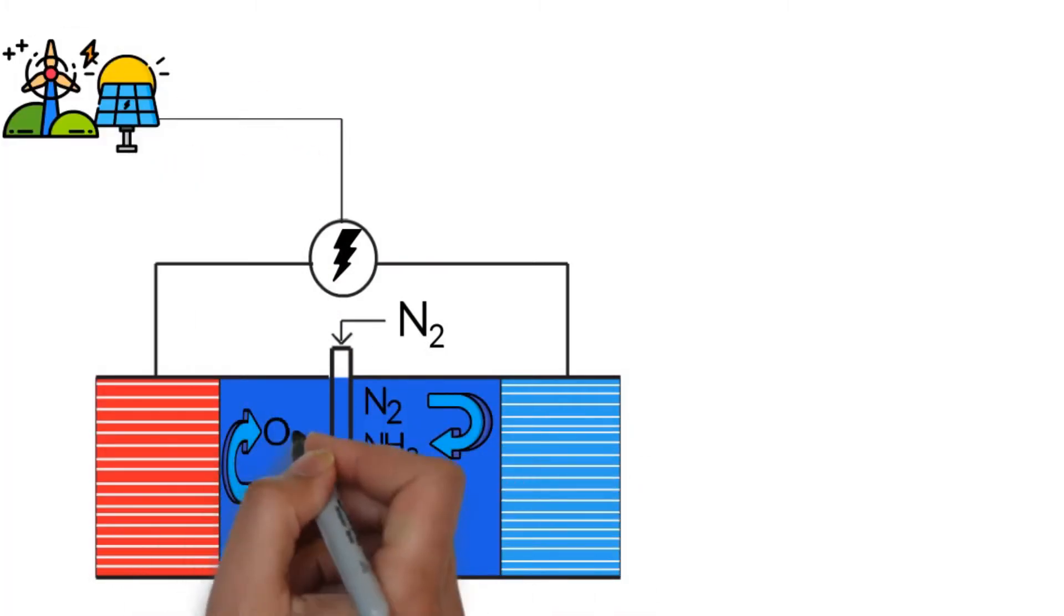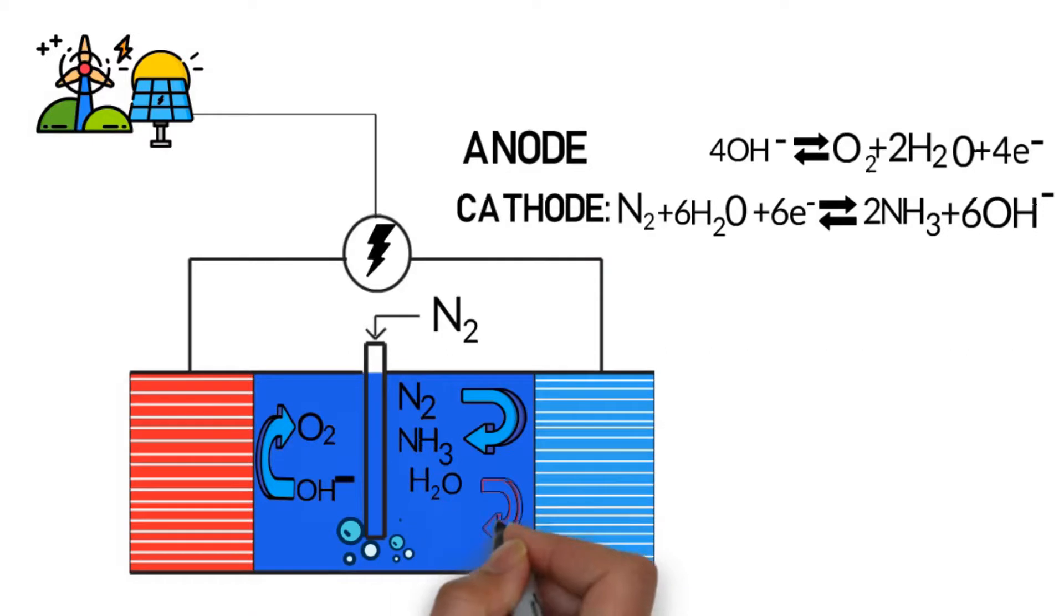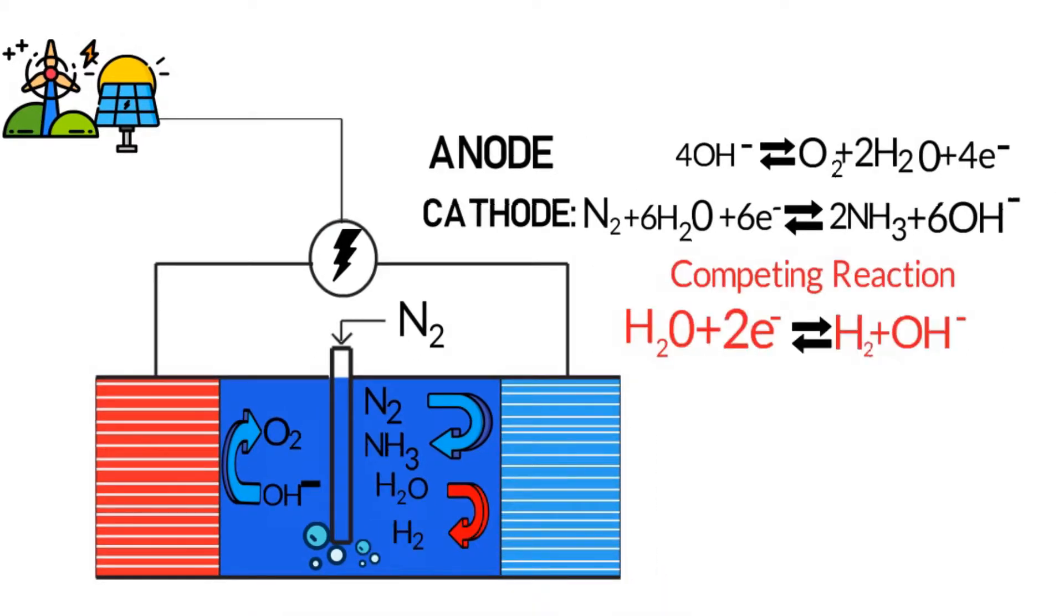Before we can scale up this approach, we have to overcome one major challenge – hydrogen evolution. This reaction steals electricity from the ammonia production, making the process less efficient.